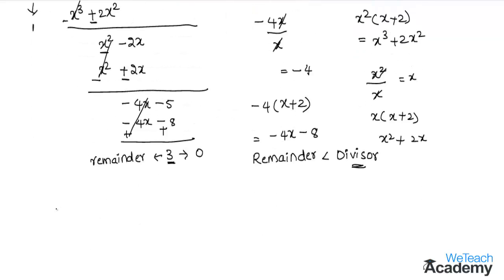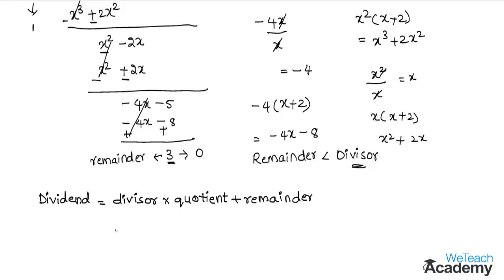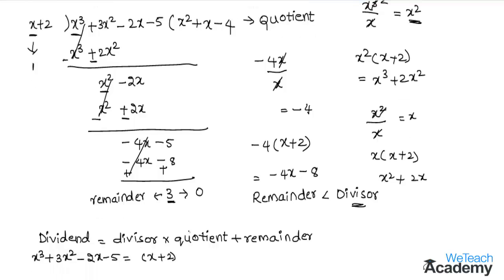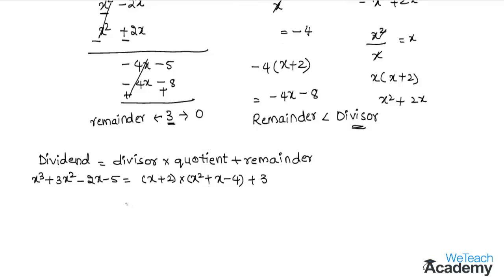Now let us verify the result by proving: dividend = divisor × quotient + remainder. So x³ + 3x² - 2x - 5 = (x + 2)(x² + x - 4) + 3. Multiplying x by the group: x times x² gives x³, x times x is +x², and x times -4 is -4x. Multiplying 2 by the group: 2 times x² gives 2x², 2 times x is +2x, and 2 times -4 is -8. Then we add +3.